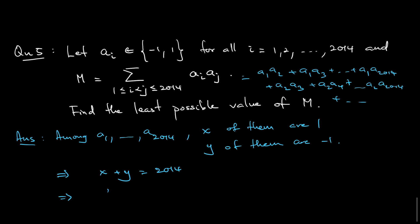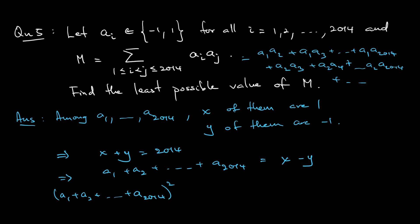Now consider the sum a₁ + a₂ + … + a₂₀₁₄ = x − y. Squaring both sides: (x−y)² = (a₁+a₂+…+a₂₀₁₄)². The right-hand side expands as a₁² + a₂² + … + a₂₀₁₄² plus twice all the cross terms. Since each aᵢ² = 1, the squared terms sum to 2014. The cross term sum is exactly 2M. So (x−y)² = 2014 + 2M.